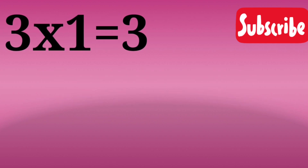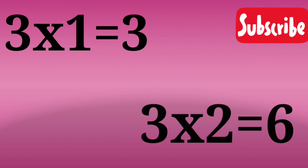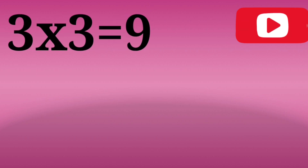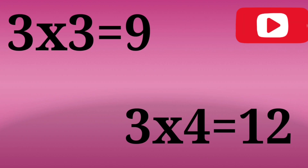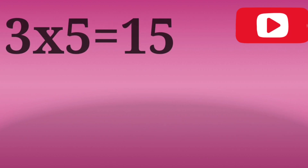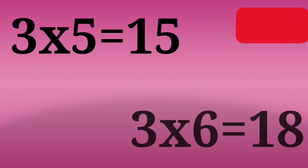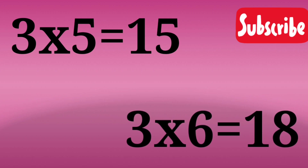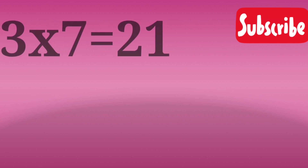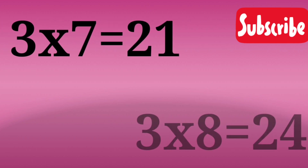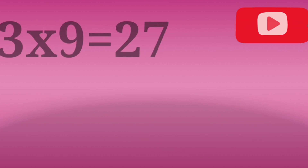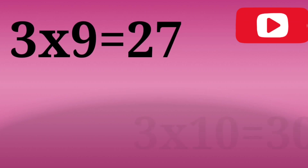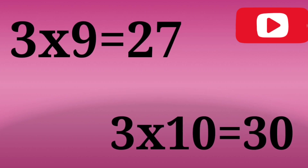3 1's are 3, 3 2's are 6, 3 3's are 9, 3 4's are 12, 3 5's are 15, 3 6's are 18, 3 7's are 21, 3 8's are 24, 3 9's are 27, 3 10's are 30.